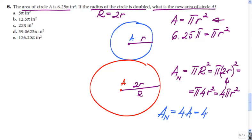So we can say the area of the new circle is gonna be 4 times the initial circle's area, 6.25 pi. Which means this will equal...